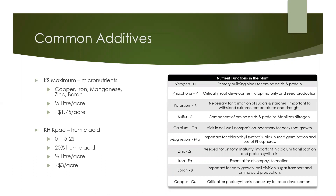The other product is called KH K-PAK. This product has a small amount of phosphorus, potassium and sulfur, but is also 20% humic acid. Humic acid is a high carbon content building block of organic matter that does a number of things like unlock pH bound nutrients, increase the cation exchange capacity of the soil, and increase microbial activity. This is also typically blended at the plant with another product and applied at a rate of half a liter an acre, which works out to about $3 an acre.